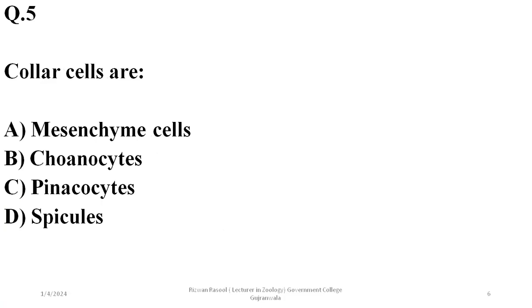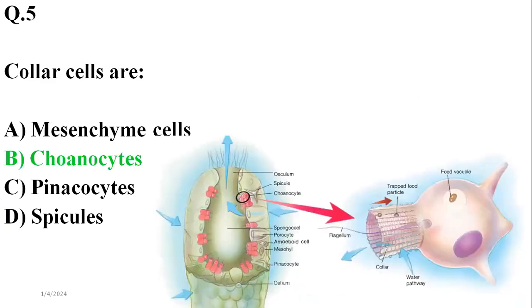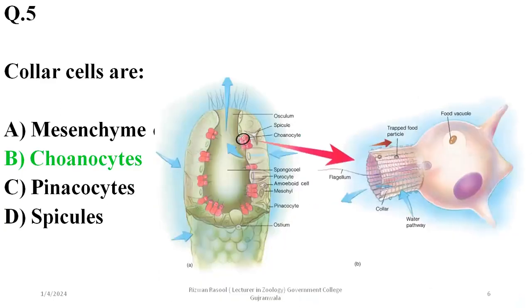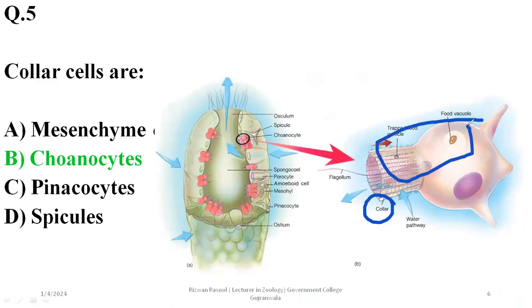Collar cells are basically choanocytes because they possess collar structures, as seen in the diagram. Sponge ancestors are considered choanoflagellates due to possession of these cells, since choanoflagellates also have similar cells in their structure even at mature stages.